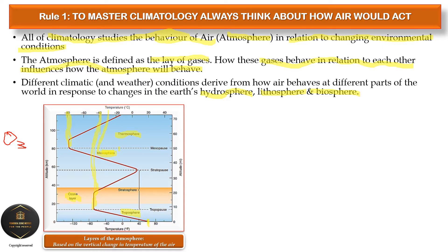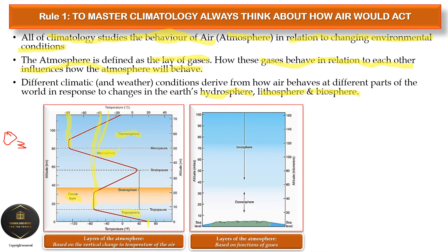The thermosphere is very cold because the sun doesn't directly heat the atmosphere — it heats the ground, and the ground is responsible for heating the atmosphere. The warmed air that rises into the upper atmosphere has already lost much of its heat by the time it reaches those heights, making the thermosphere extremely cold.